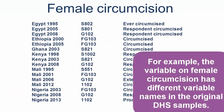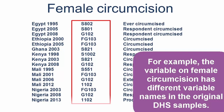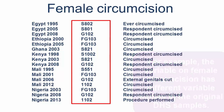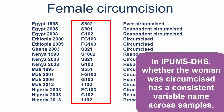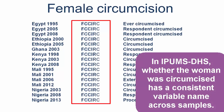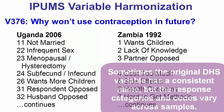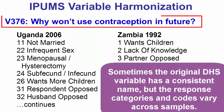For example, the variable for female circumcision has different variable names in the original DHS samples. In IPHMS DHS, whether the woman was circumcised has a consistent variable name across samples.